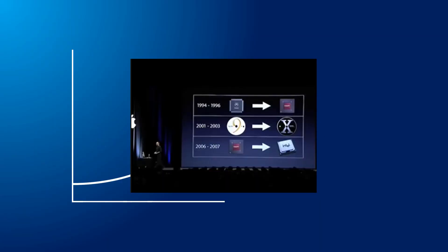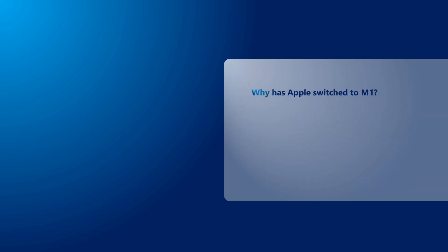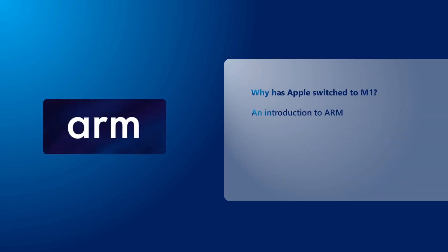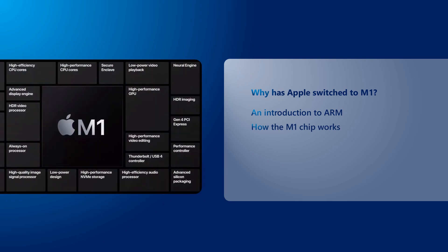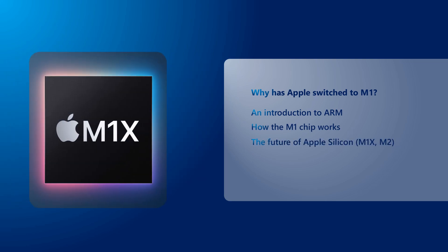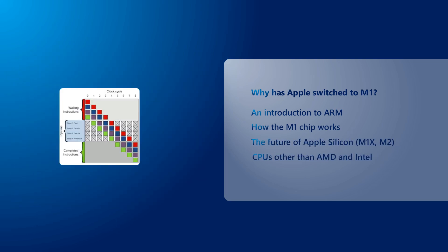Over the years, we saw Apple cross Intel in mobile CPU performance with the A-Series chips, used widely for iPads and iPhones. Apple switched to Intel from PowerPC since it provides more performance per watt in the year 2005. In today's video, we are going to understand Apple's new chip through an introduction to ARM, how the M1 chip works, the future of Apple silicon, and as a bonus, talk about some of the CPUs other than Intel and AMD.